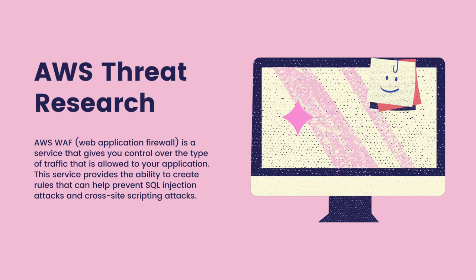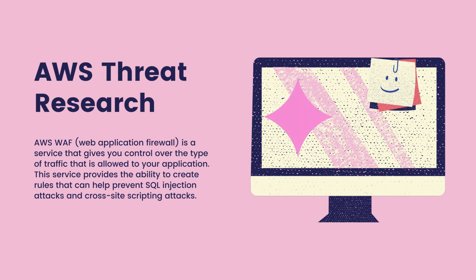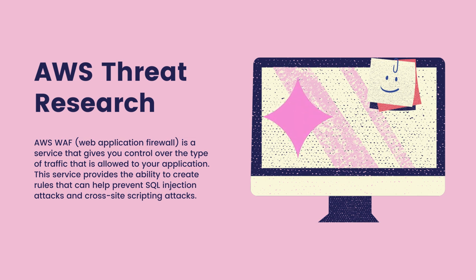One of the primary worries, besides allocating the right amount of throughput, is protection against SQL injection attacks. These attacks make up two-thirds of all attacks against web applications in the world. Developers under pressure to create prototypes and minimal viable products can leave their data up for grabs if they're unaware. AWS Web Application Firewall — also known as WAF — is a service that gives you control over the type of traffic that is allowed to your application, which is another way to classify and then secure your data accordingly.